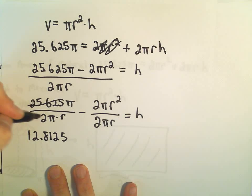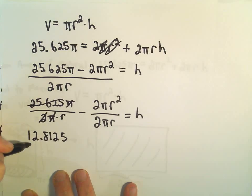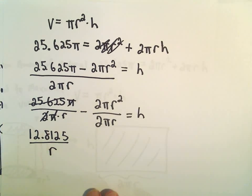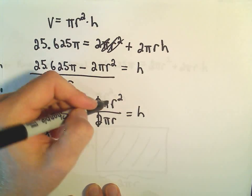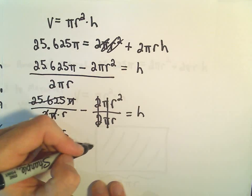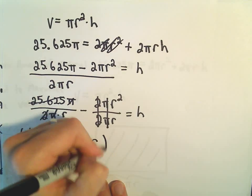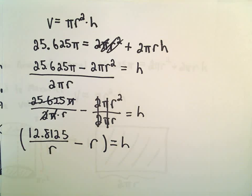So that takes care of that. Notice the π's would just cancel. Then we would still have our R in the denominator. And here the 2 will cancel, the π will cancel. R² over R is just R. So now we've got an expression for H.